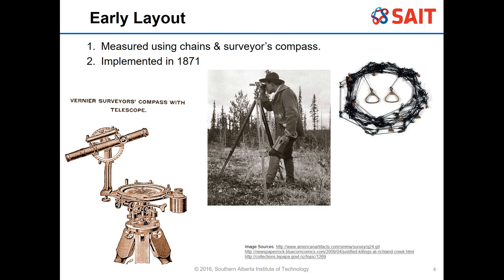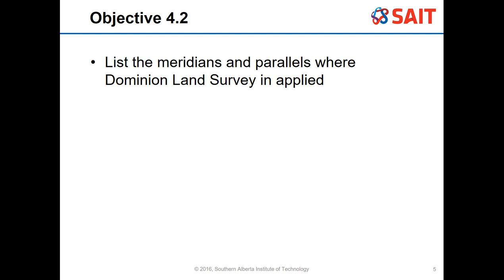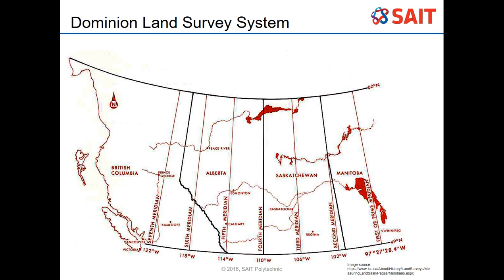Getting into where the Dominion Land Survey is applied: the DLS system starts on the east side at 97 degrees, 27 minutes, 28.4 seconds west - the longitude value called the first meridian, or prime west meridian, also known as the Winnipeg Meridian. It's located just west of Winnipeg and runs between the 49th parallel in the south - anything south of that is the US - and the 60th parallel, which is the Arctic Circle value.